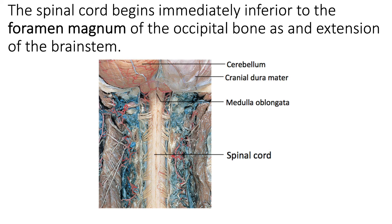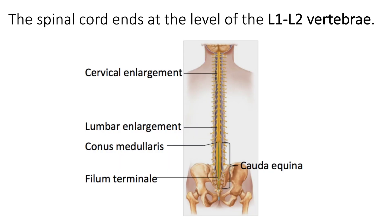The spinal cord passes through the vertebral cavity, but it is actually shorter than the vertebral cavity. The spinal cord ends at approximately the L1 and L2 vertebrae, so there is still quite a bit more vertebral cavity inferior to L1 and L2, but the spinal cord officially ends around there.